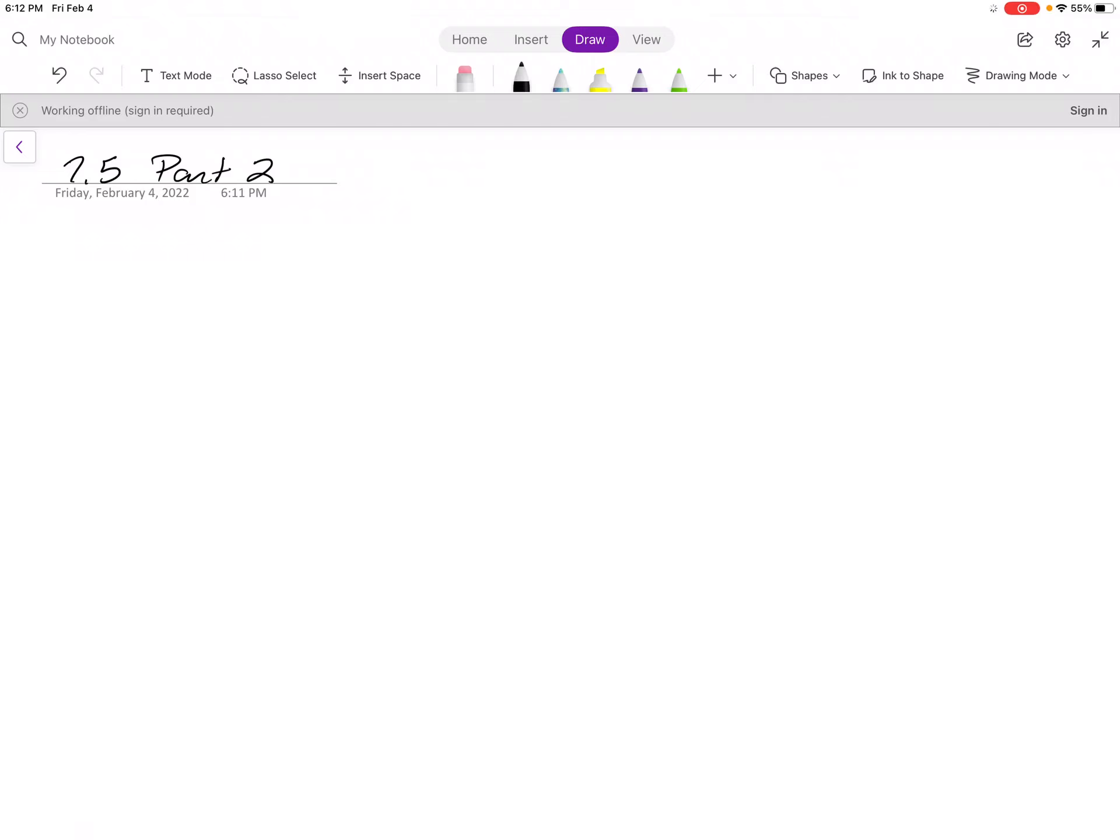All right, here's part two of the 7.5 worksheet, the review items. We did one, two, three, four, and then the second number three, which we're going to call number five.